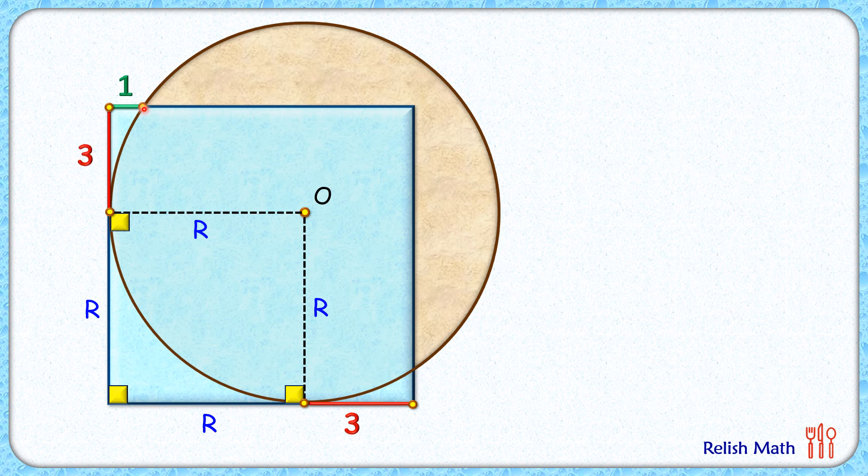Now from this point let's draw one more radius here, and also from this point let's drop a perpendicular on this horizontal line. Now if we look at this right angle triangle here, the height of this perpendicular is same as three centimeters. Now here this remaining length is same as one centimeter, so the base length of this right angle triangle will be R minus one centimeters.